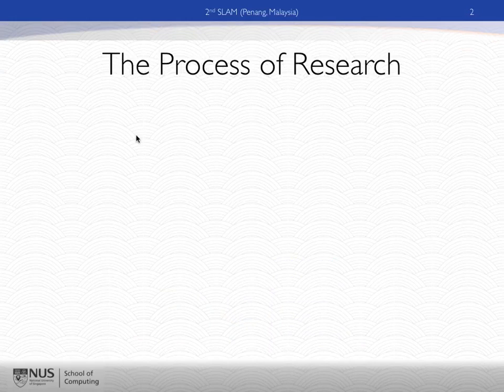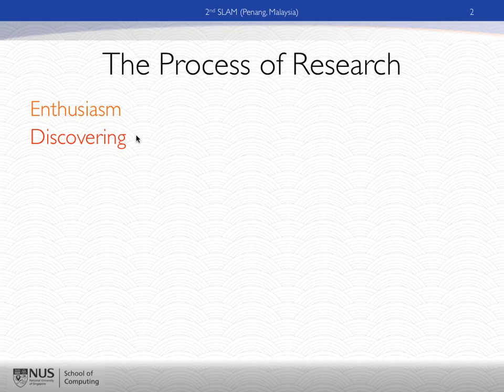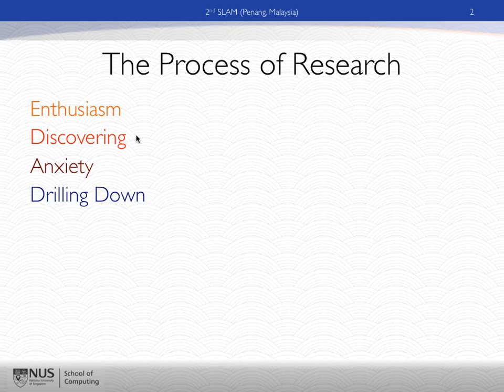I want to start by talking about the process of research. A lot of us here are professors or graduate students with undergraduate or graduate students to teach about research. There are a lot of different processes involved. First, we start with enthusiasm — I'd like to do research, I'd like to figure out what that is. Discovering a new science, and then finding that Google Scholar has that many pieces of literature on your subject. There's some anxiety about how you focus down to a narrow patch of work that you think you can meaningfully contribute to.